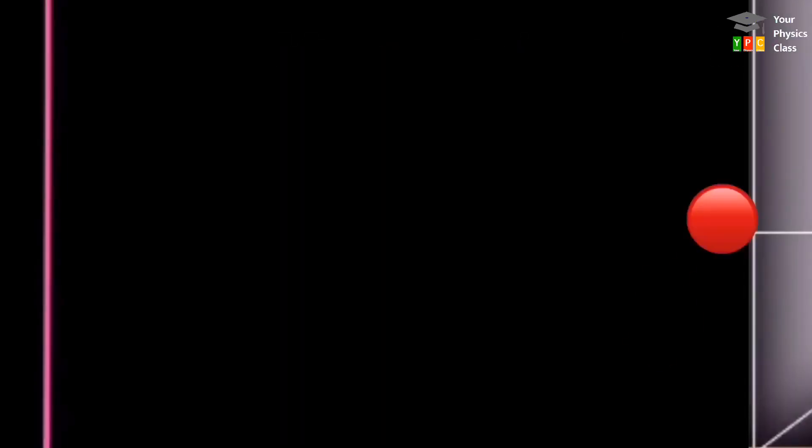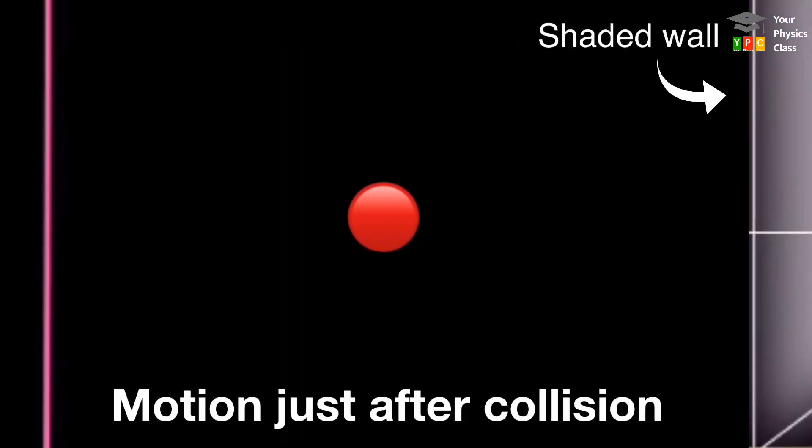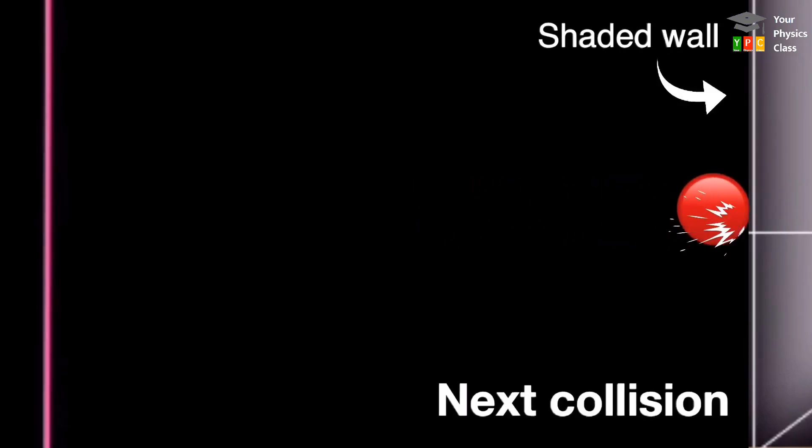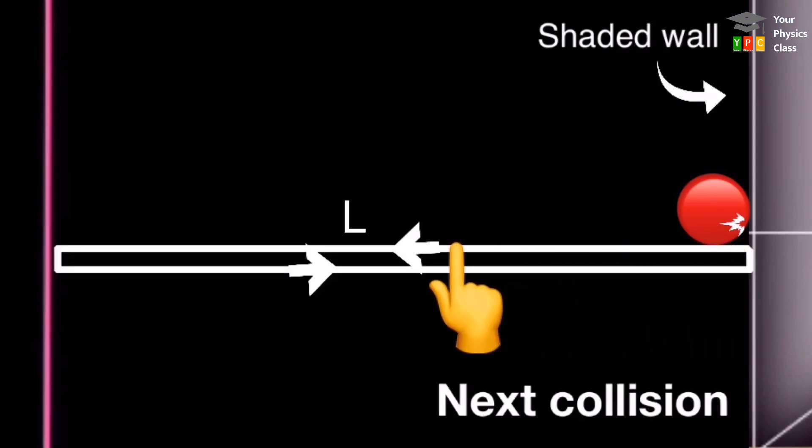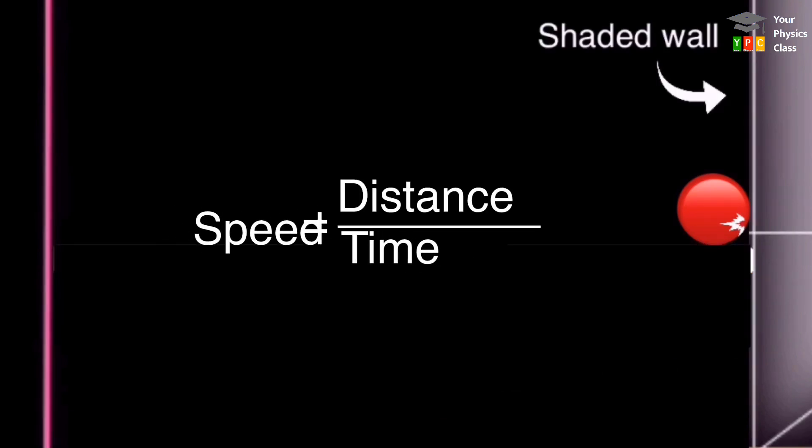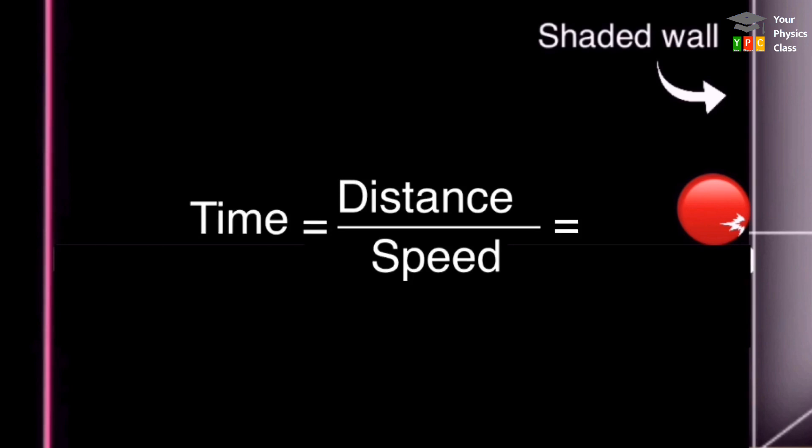Okay. Ab yeh molecule reverse jayega. Next opposite wall ko hit karega aur phir se shaded wall ki taraf rebound hoga. Phir se collide hone ke liye. Is tarah molecule 1 shaded wall ko hit kar raha hai aur momentum change kar raha hai. Yahan molecule 1 ko twice L distance travel karna padta hai wall ko dobara hit karne ke liye. To VX speed se time interval between two successive collision hua twice L upon VX.